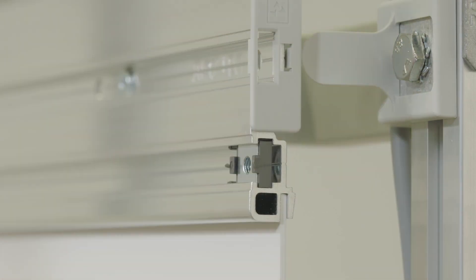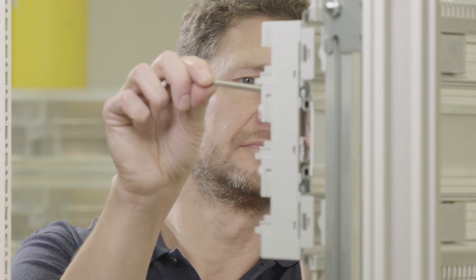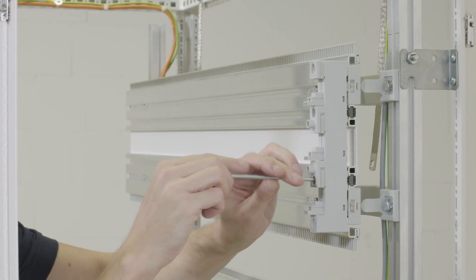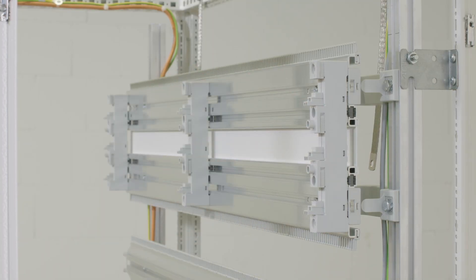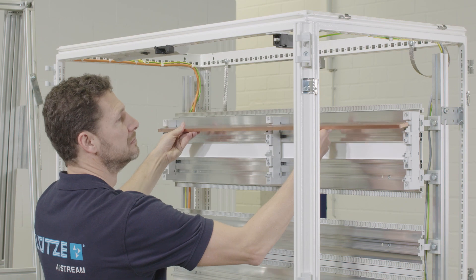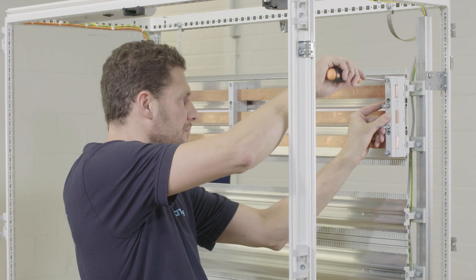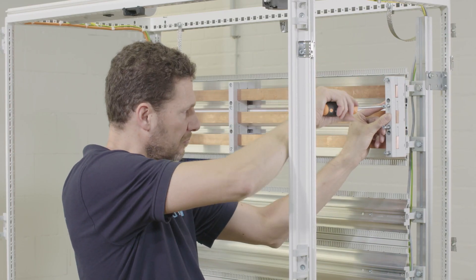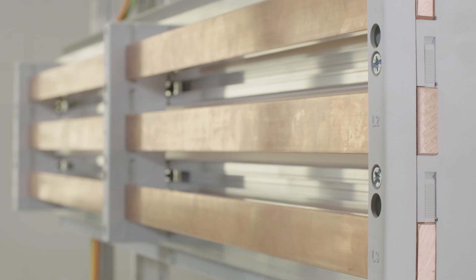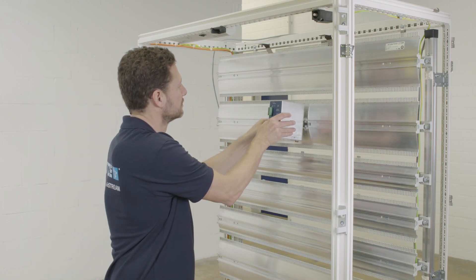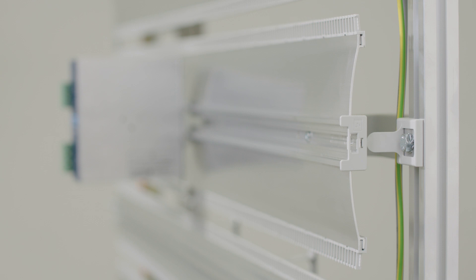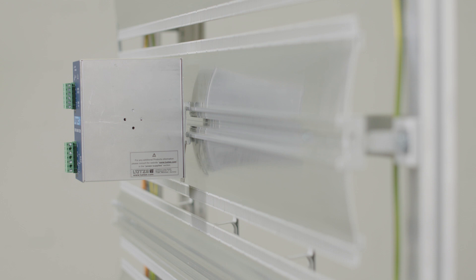Sliding nuts allow easy installation, for example of the busbar system as shown in this example. For control cabinets that are in series, a continuous busbar system can be easily created. A wide variety of DIN rail units can be simply snapped on, taking up a minimum of space. Due to the rounded profiles, larger components can also be attached.